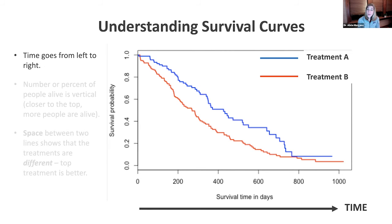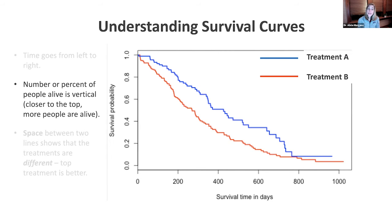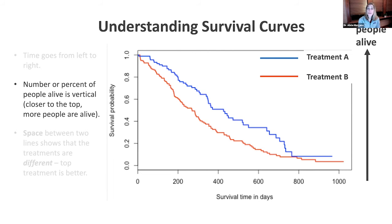The next thing to know is that the number — or the percent — of people who are alive in this clinical trial are represented on the vertical axis on the left. This shows that the higher the curve is, the more people are alive over time.